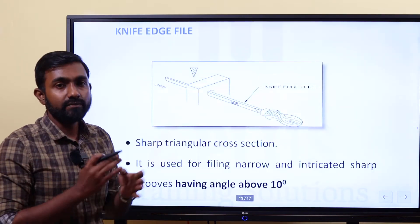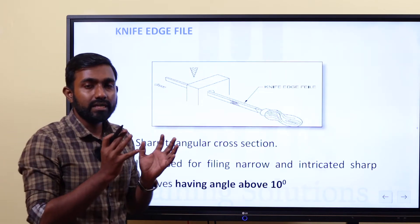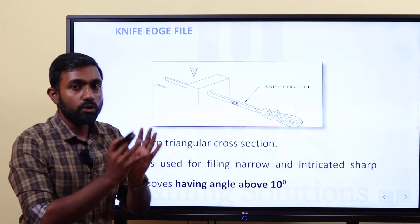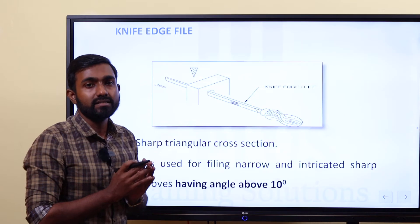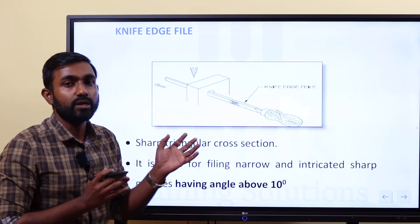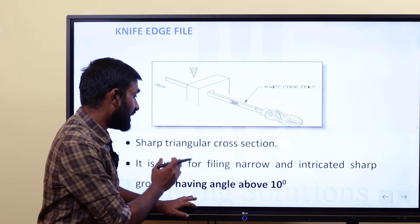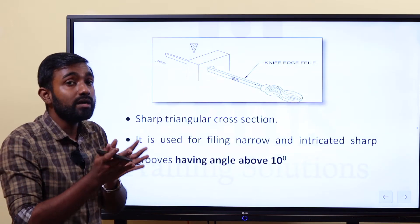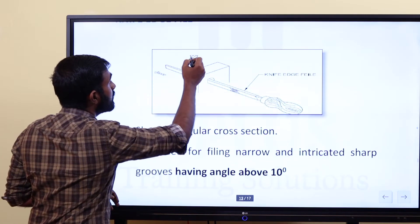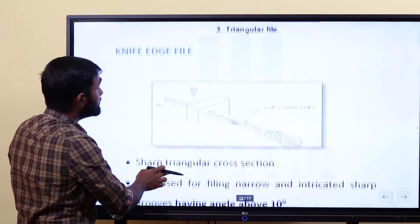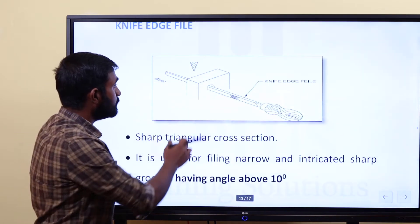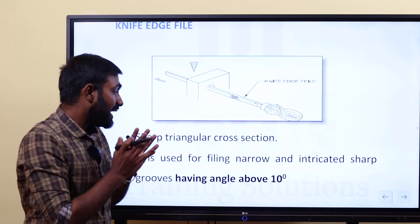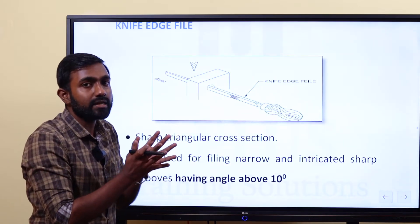Next is knife edge. Cross-section-wise, the angle is used for more than 60 degrees for triangular files. Knife edge files are used for filing narrow and intricate shape grooves having an angle above 10 degrees. So, if you have to look at an angle of 10 degrees, we use the knife edge file; more than 60 degrees, we use the triangular file.